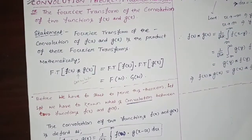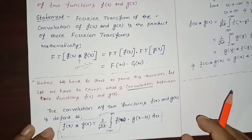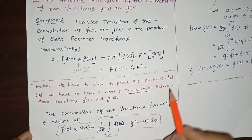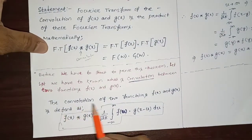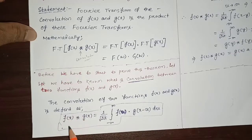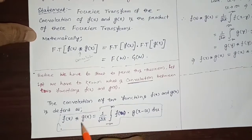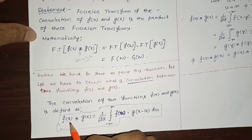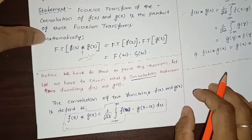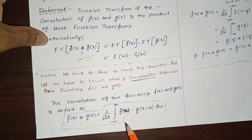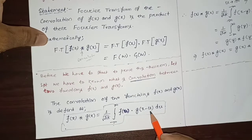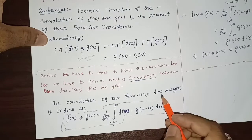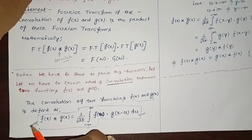Before we start to prove this theorem, we first need to know what is convolution between two functions f(x) and g(x). The convolution of f(x) and g(x) — we can consider that convolution means coupled together — is defined as f(x)*g(x) = (1/√(2π)) ∫ from minus infinity to plus infinity of f(u)·g(x−u) du.